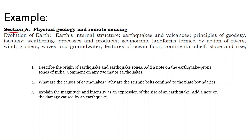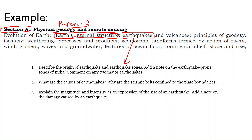Now let's understand how to make notes. I have taken one example which you can replicate for the rest of your syllabus. Section A, the first section of Paper 1, has the syllabus of physical geology and remote sensing. The syllabus is broad — 'Earth's internal structure, earthquakes, volcanoes' — just a broad overview with nothing specific. So you must refer to the PYQs. Taking the example of earthquakes: from previous year questions you can identify the dimensions being asked — origin of earthquake, earthquake zones, earthquake-prone zones of India, and examples of major earthquakes.